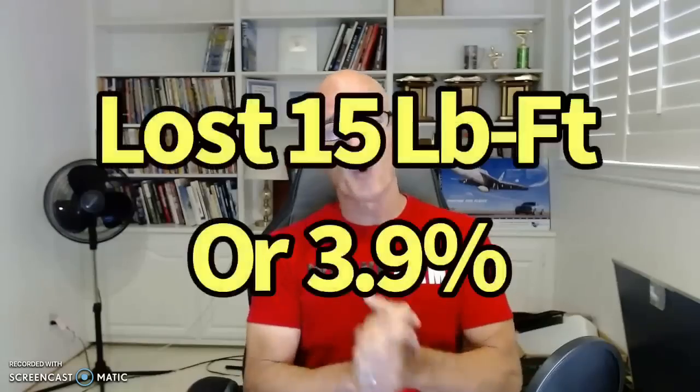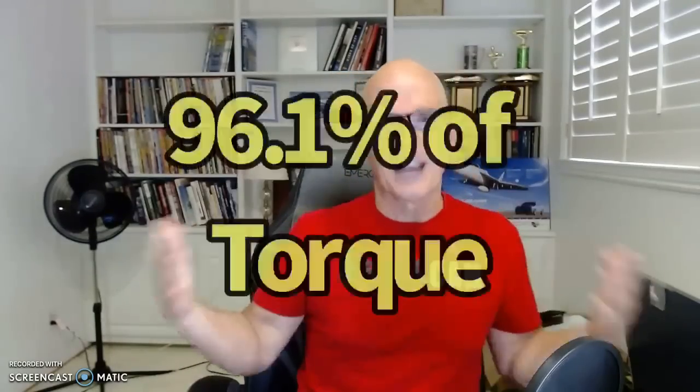That's doing pretty good, and we did even better on torque. If you look at the peak torque output, it only dropped by 3.9 percent or 15 foot-pounds. That means we have 96.1 percent of the available torque even at 50 percent throttle.